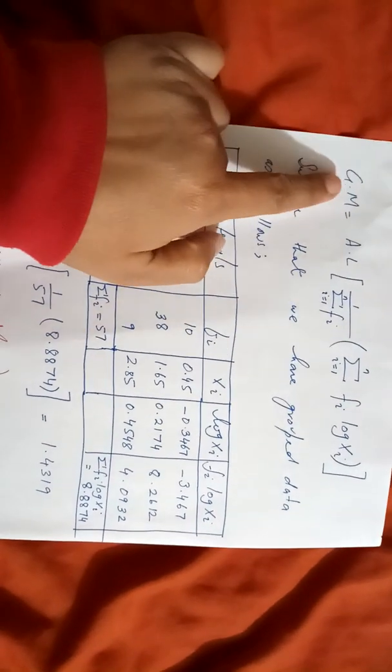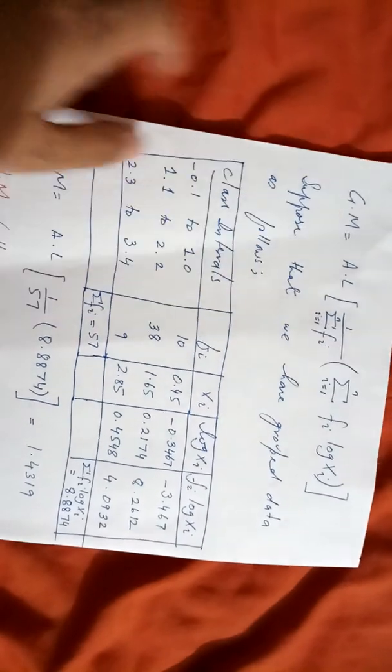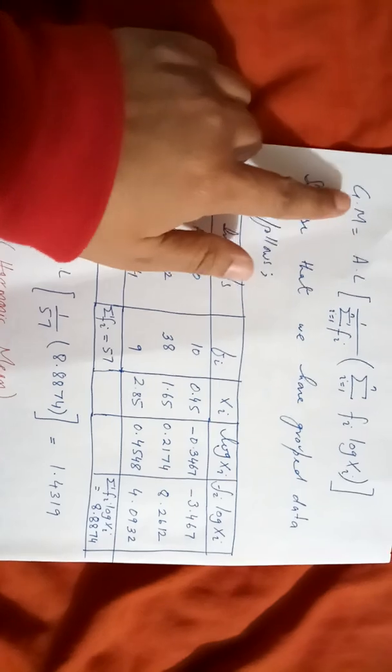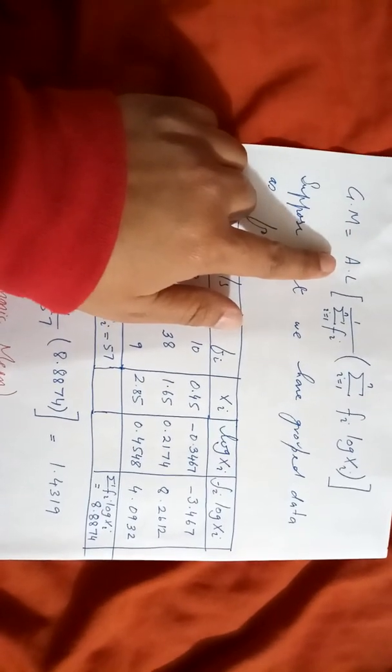This is what you are looking at at the beginning: geometric mean is equal to antilog. That simply means antilog. If you have the first lecture to attend, now you know that if you have a log formula with geometric mean, then you have to take antilog.